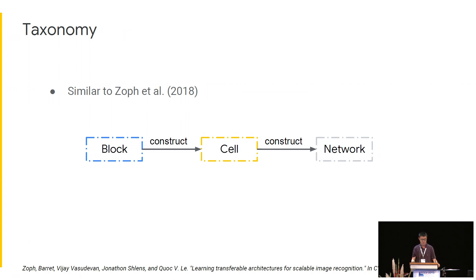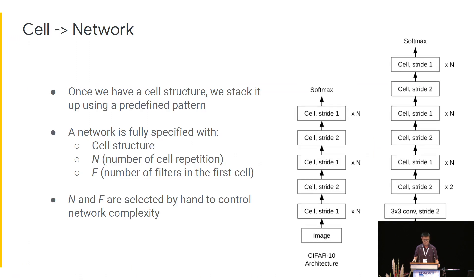As an overview, we adopt the following strategy and taxonomy where a network consists of cells and a cell consists of blocks. Our goal of architecture search is to find a repeatable cell structure. Once we have a cell structure, the network is constructed using a predefined pattern. On the right, we show how networks are constructed for CIFAR-10 and ImageNet, which has more stride-two layers at the beginning. A network is fully specified with two more numbers: capital N, the number of cell repetitions controlling depth, and capital F, the number of filters in the first cell controlling width. They are selected by hand to reach a desired network complexity.